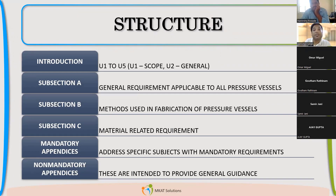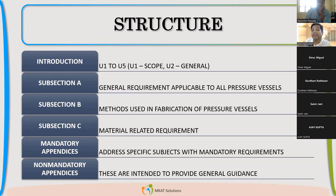All these things will be covered in the introduction. Also, the structuring part of it — like subsection A, subsection B, subsection C — is also briefly covered in the introduction. So, the introduction will talk about the scope and general requirements. Subsection A covers all the general requirements related to design, material, welding, inspection, hydrostatic testing, pneumatic testing, and proof testing.